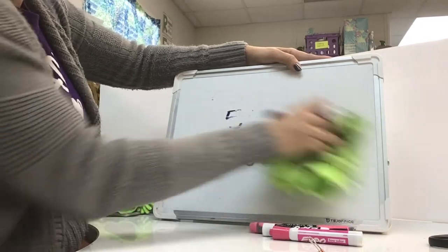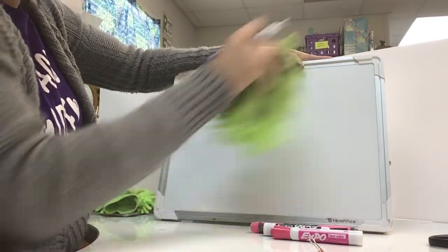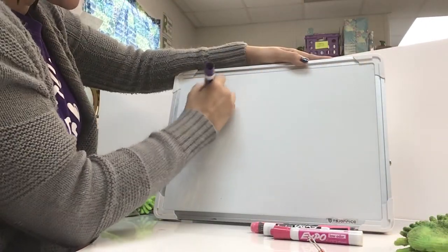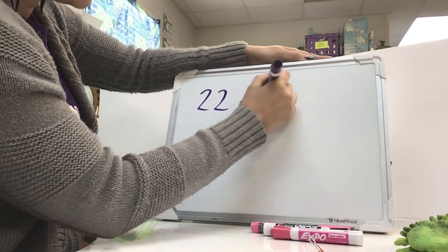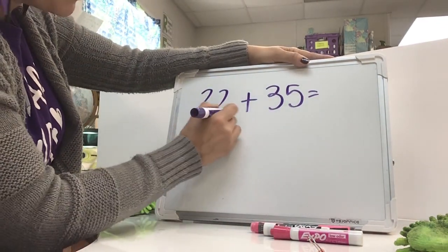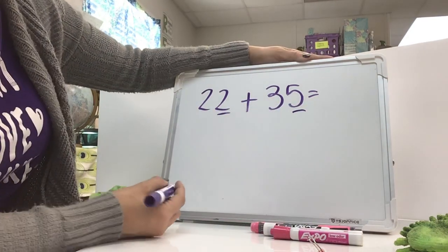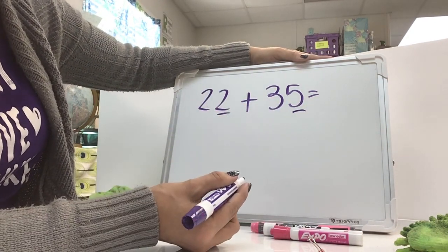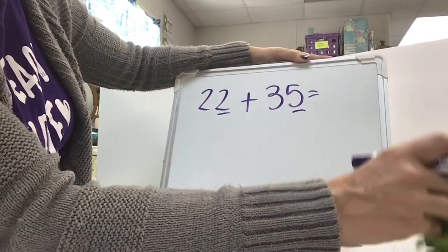Compensation only works for regrouping problems. And so if you had a problem such as 22 plus 35, you can't use compensation for that because 2 plus 5 is a number that's going to be less than 10. So 2 plus 5 is 7. There's no regrouping.